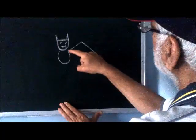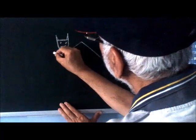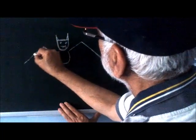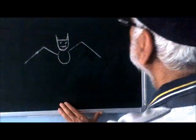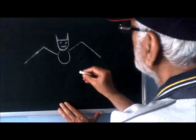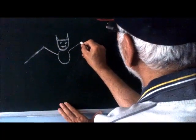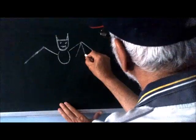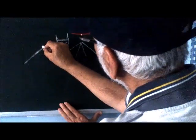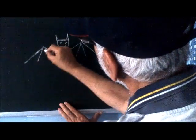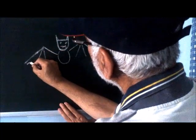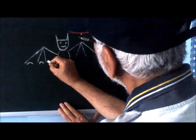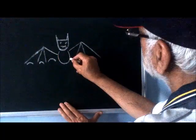Make a pointed line here, another pointed line that side. Now draw a pointed line here and a pointed line here. Make a curve, another curve, another curve.